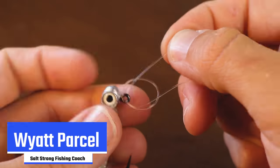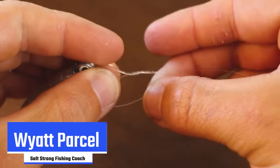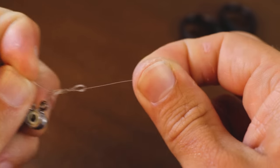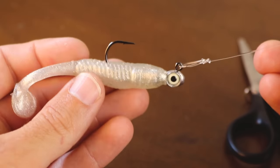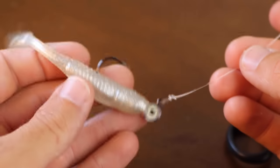Today I'm going to show you guys how to tie the non-slip loop knot. Whether you're fishing inshore or offshore, this is one of the best knots to use. It's extremely quick to tie, incredibly strong, and it adds a lot of extra action to your lures.